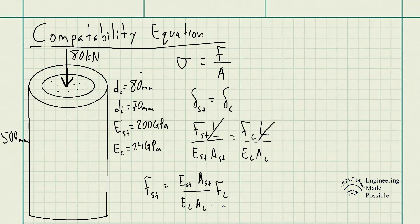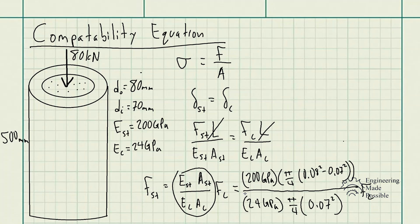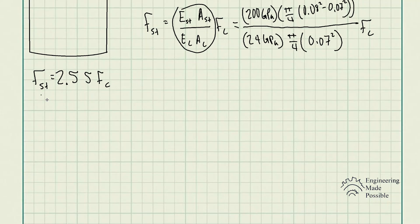After algebraic manipulation, we get a relationship between the steel force and the concrete force. Plugging in the values — and keeping in mind that the cross-sectional area of the steel requires subtracting the inner area from the outer area — we solve for the constant and get that the force in the steel member equals 2.55 times the force in the concrete. This already shows that the steel is supporting most of the load.